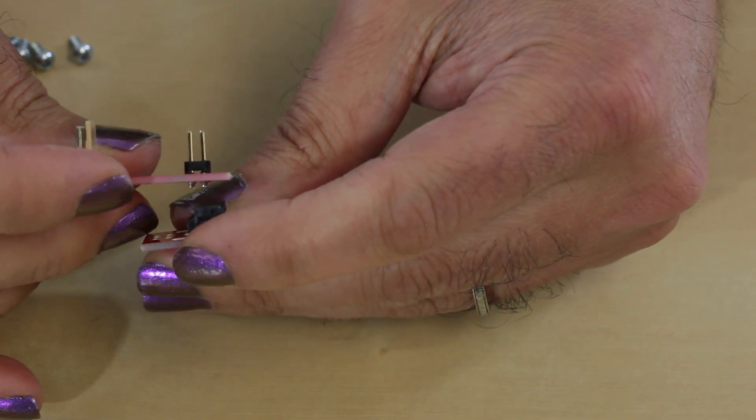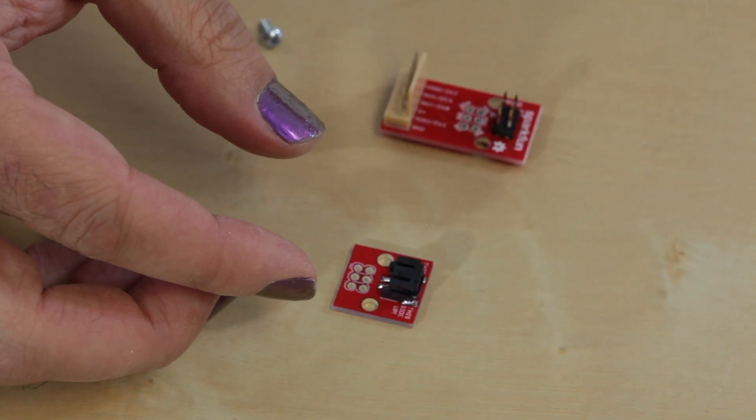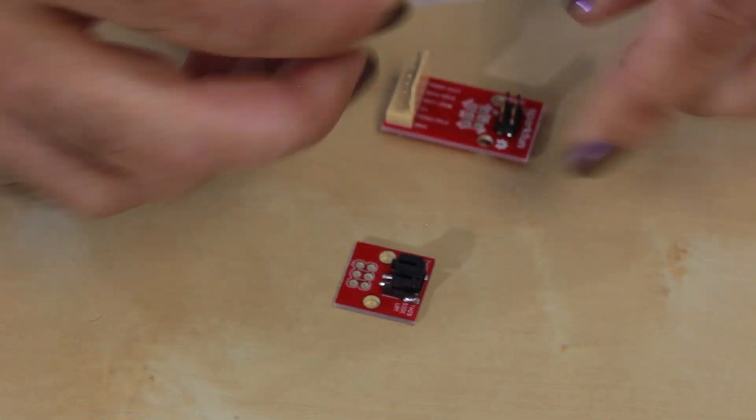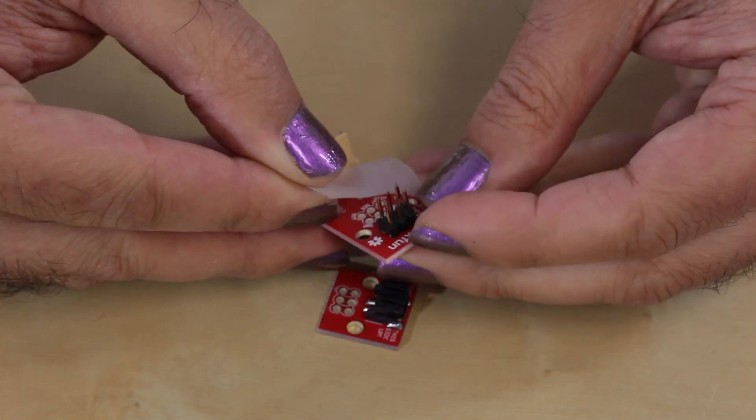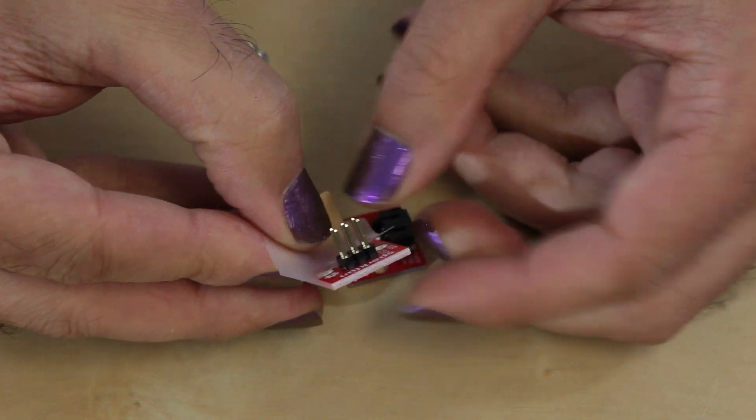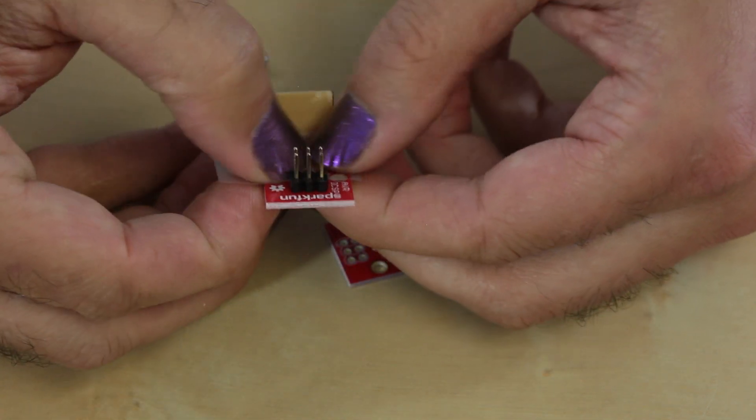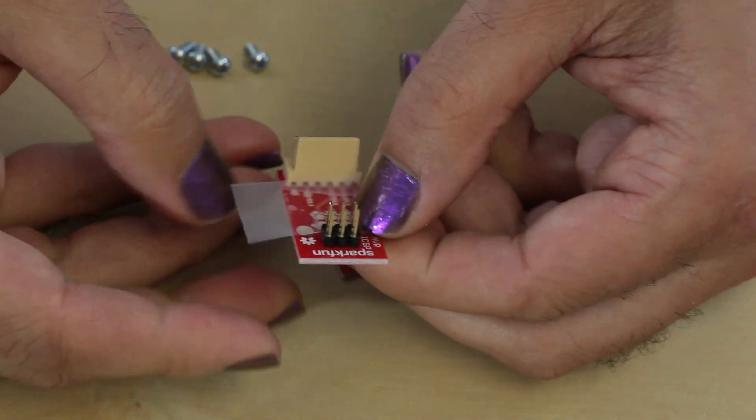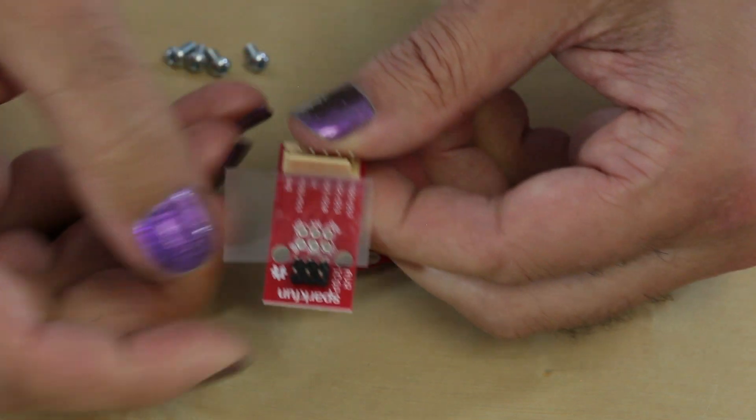The two pieces stack like so, and the way that I've found to do this most easily is to take a little itty bitty piece of your cellophane tape and just put that over this.